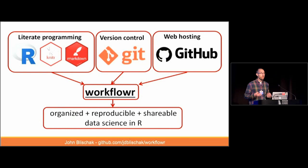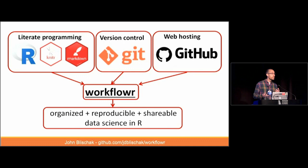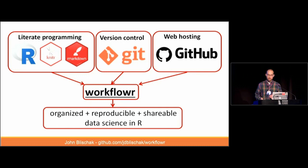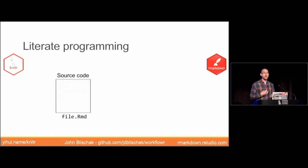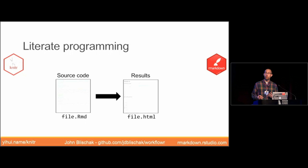These challenges were my motivation for developing the WorkflowR package, which depends on three key technologies. The first is literate programming with knitr and R Markdown. This allows you to intermix your documentation and code in the source file and then generate a nice report, which is critical for reproducibility — having the code that generated the results right next to it, so there's no ambiguity about what decisions were made to create those results.